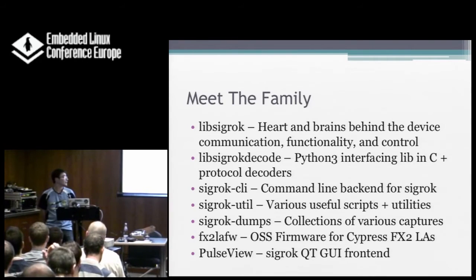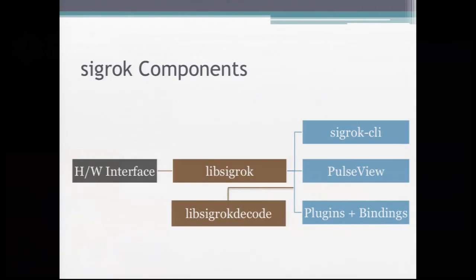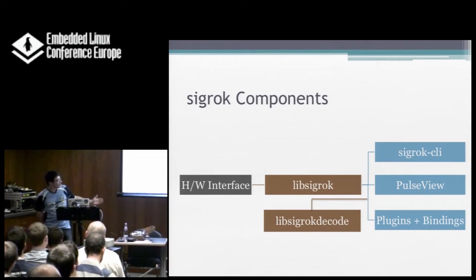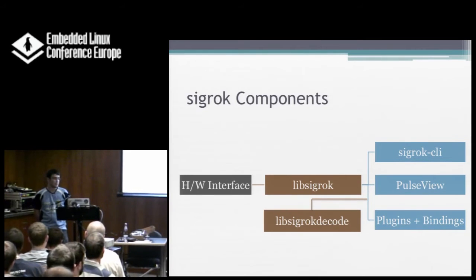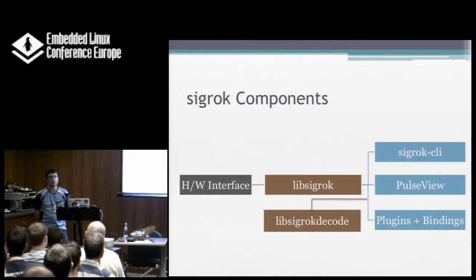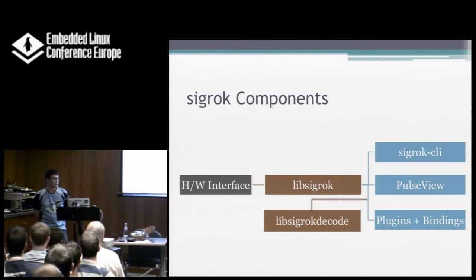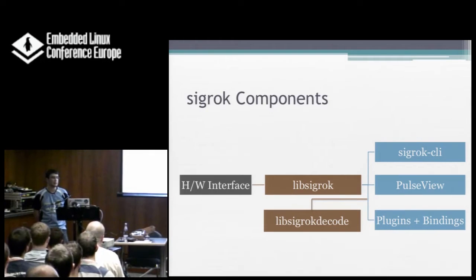PulseView makes everything nice. It's pretty recent development. The hardware interface feeds into LIBSIGROC, which interfaces to the devices and puts output back to the client, command-line, the GUI, or the plugins. We have plugins for Python and also SWIG, which you can write for any of your own scripting languages. There are also bindings, plugins for CollectD, which I'll get into later, and LIBSIGROC decode, which you can pass anything you're tracing into to decode protocols.